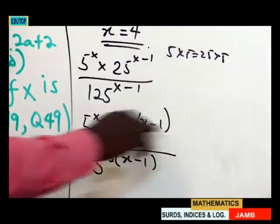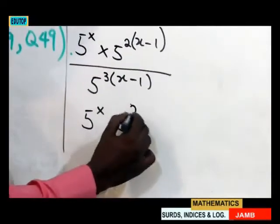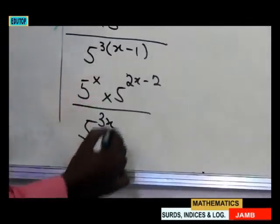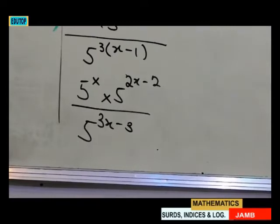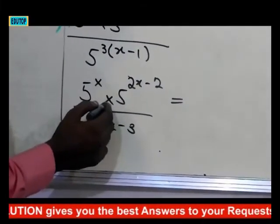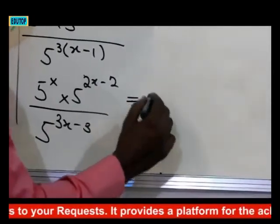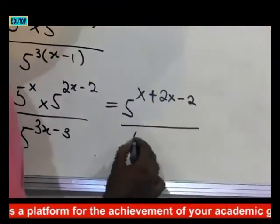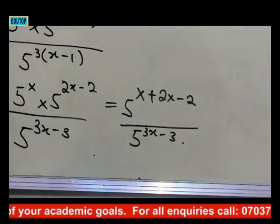By the first law of indices, when you have a common base with a multiplication sign, you add the exponents. So the numerator becomes 5^(x + 2x − 2), which is 5^(3x − 2), over 5^(3x − 3). Then by the division law of indices, we subtract exponents: (3x − 2) − (3x − 3), which simplifies further.